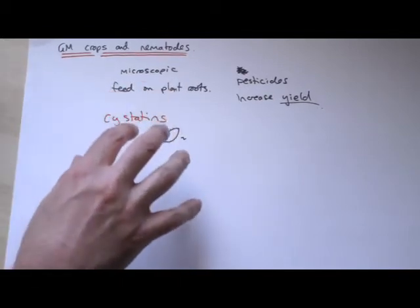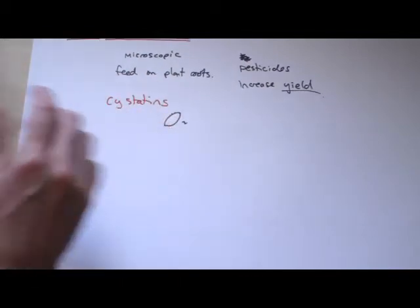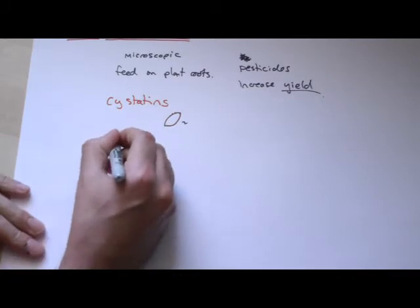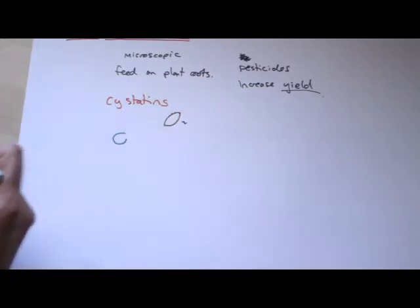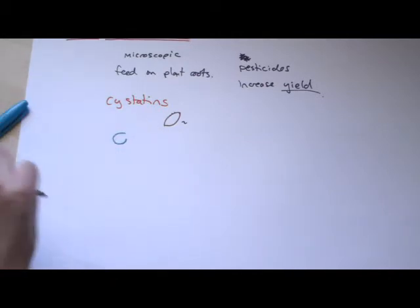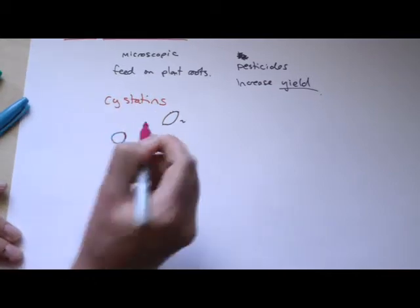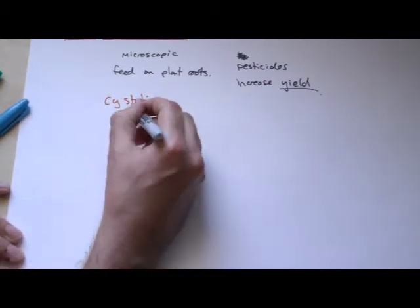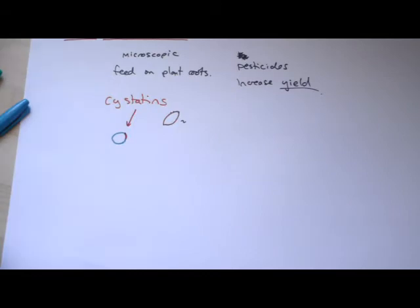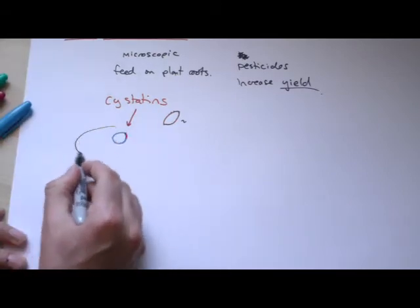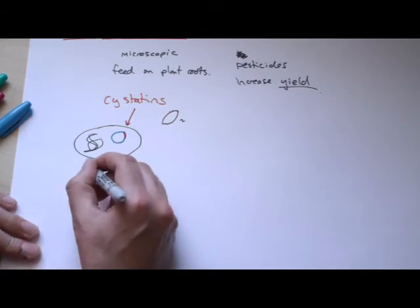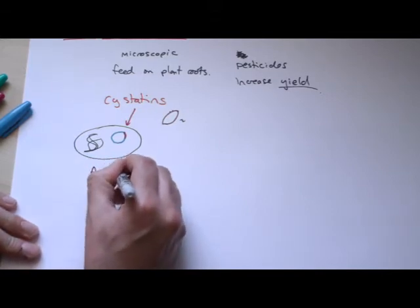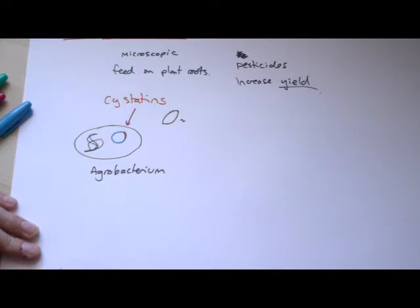What they did is they took the gene for making cystatins and they put it into a plasmid. If you're not sure what plasmids are, you need to watch the video on genetic modification. And they stuck in this gene that made cystatins, and they then got the plasmids taken back up by a bacterium, which is actually called agrobacterium.